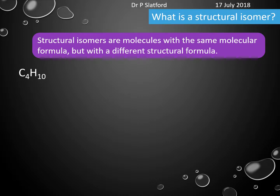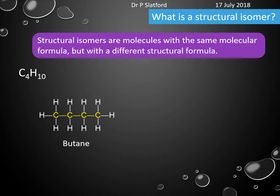I've given you the molecular formula C4H10, and the first structural formula I'm going to give you is butane, where we've got carbon after carbon after carbon after carbon, each singly bonded to each other and then each with their respective hydrogens.